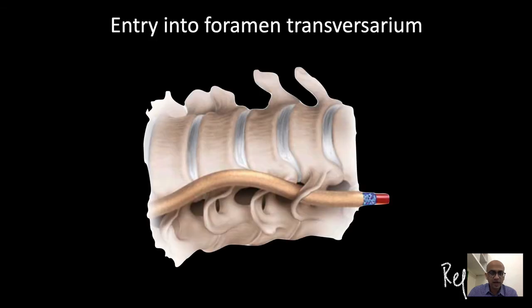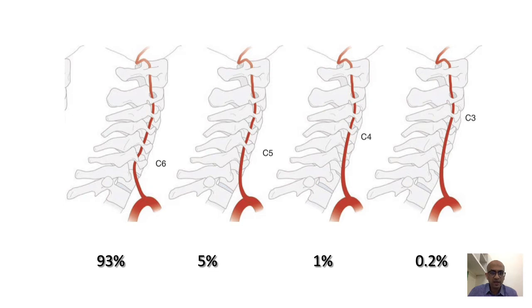Let's look at the V2 segment first. The entry of the vertebral artery into the cervical spine can be variable. Most commonly it is C6, but if it is higher, then some of the vertebral artery is unprotected and lies outside the bony confines of the transverse foramen, where it can get injured during an anterior cervical approach. In about 5% of patients, the entry is at C5, and it is very rare for the entry to be at C4 or C3.